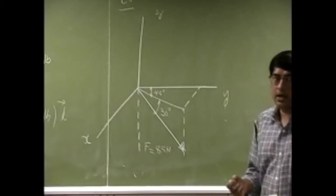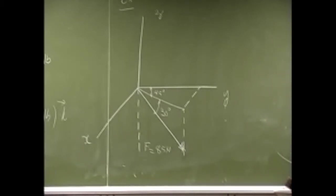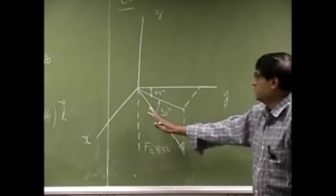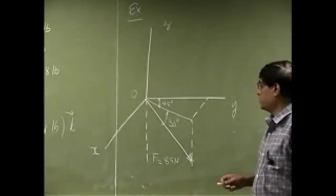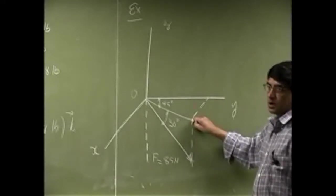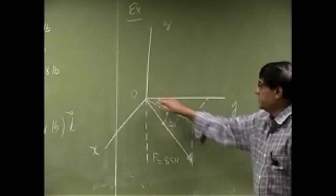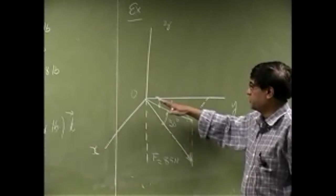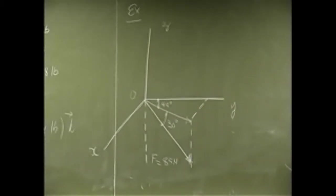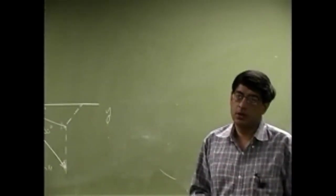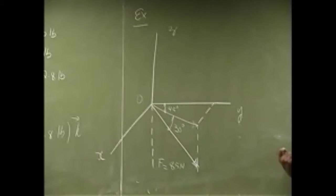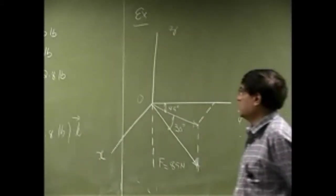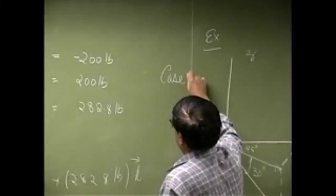So this is the case where you have the force magnitude and you are given two different angles. You have the angle between the force and a line which is on the x or y plane, or you took this point and dropped its perpendicular on this plane. This here represents the projection of this force on the x or y plane. So we know the angle between the force and its projection on the x or y plane, and then the angle between the projection and the y-axis. So this whole thing is going to be similar to case 2.